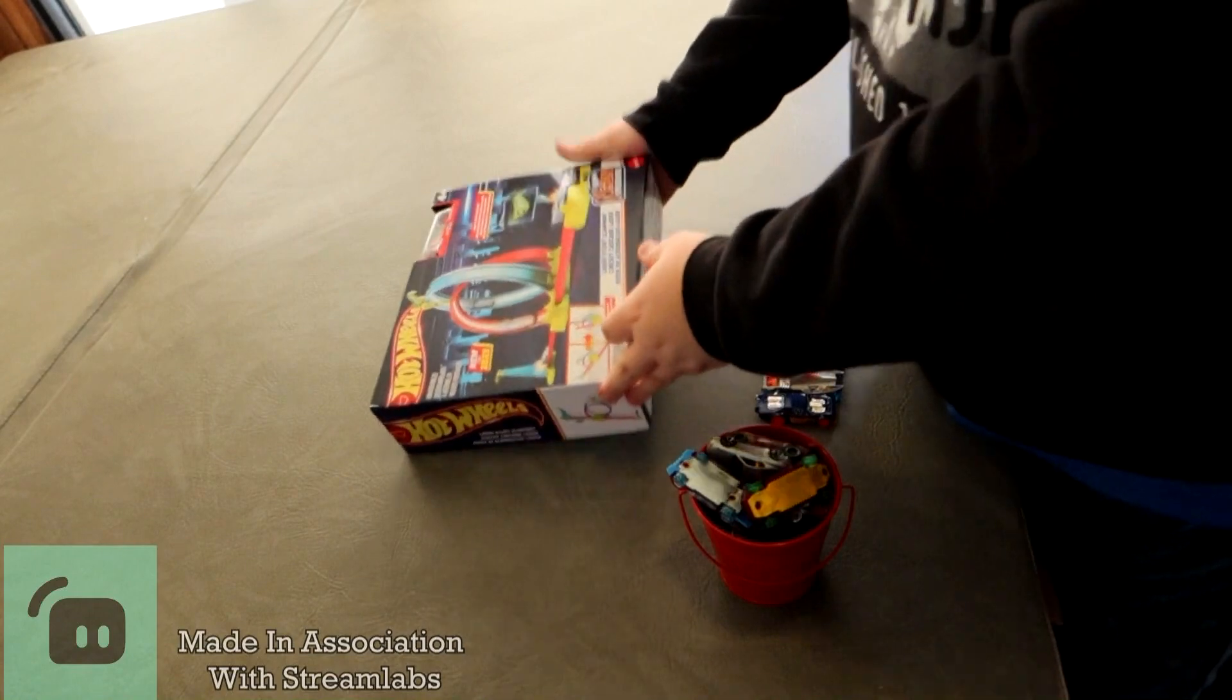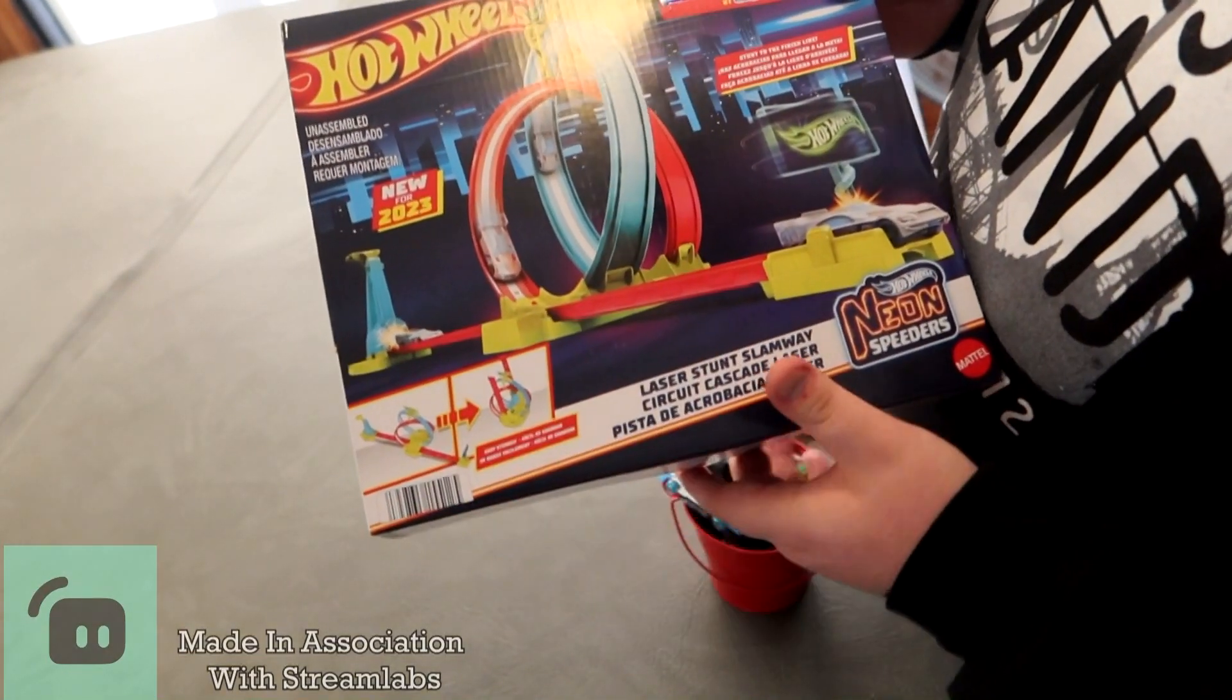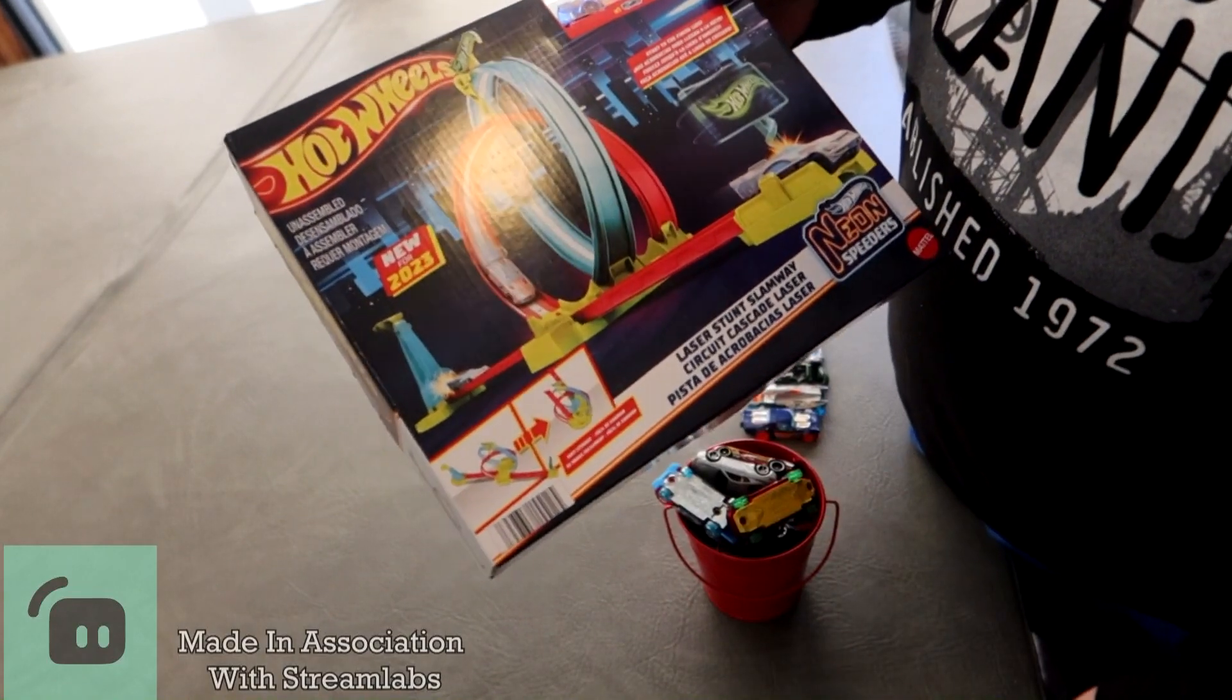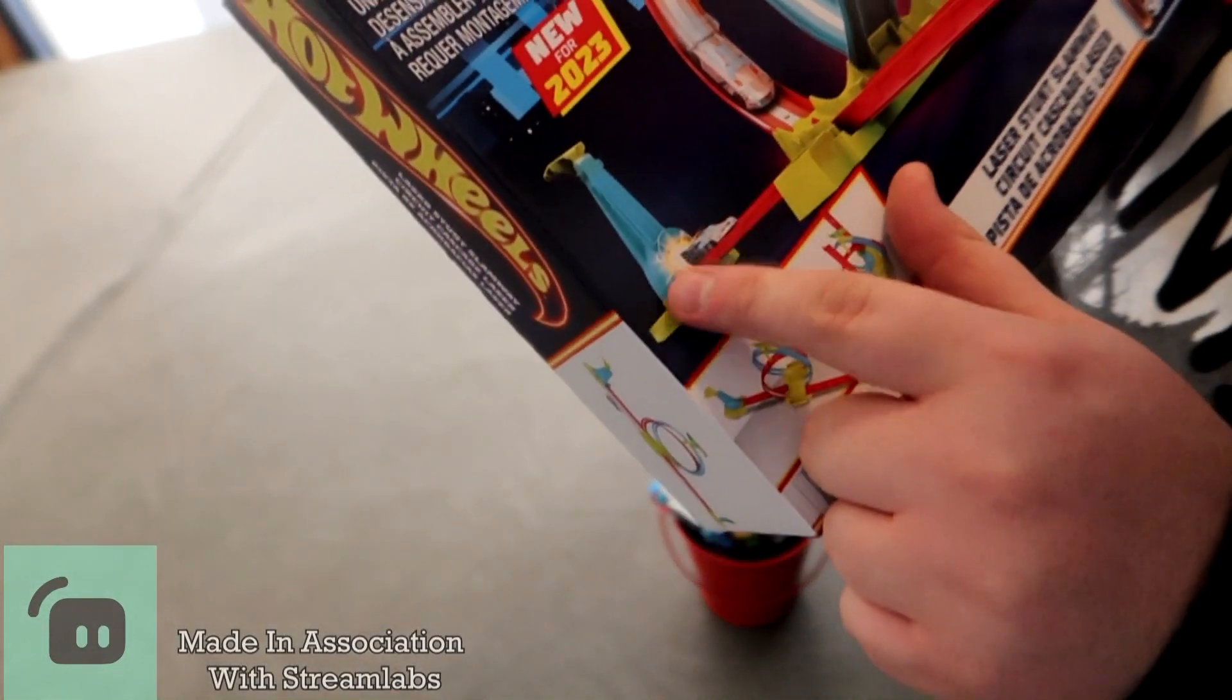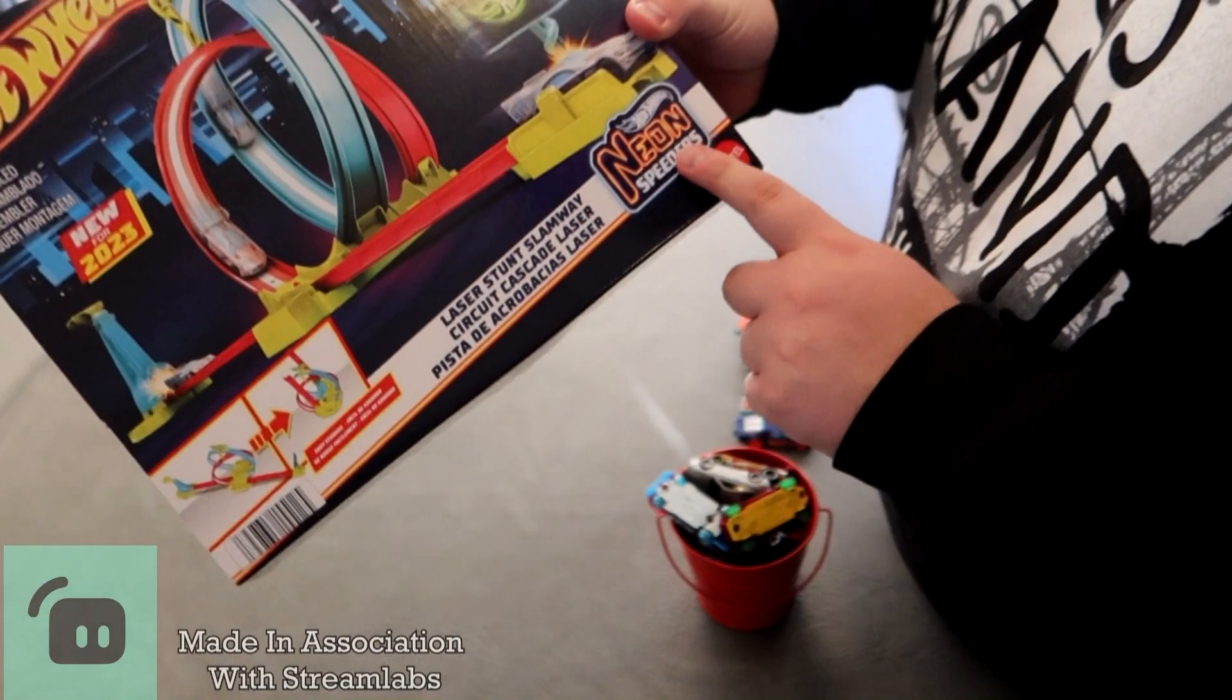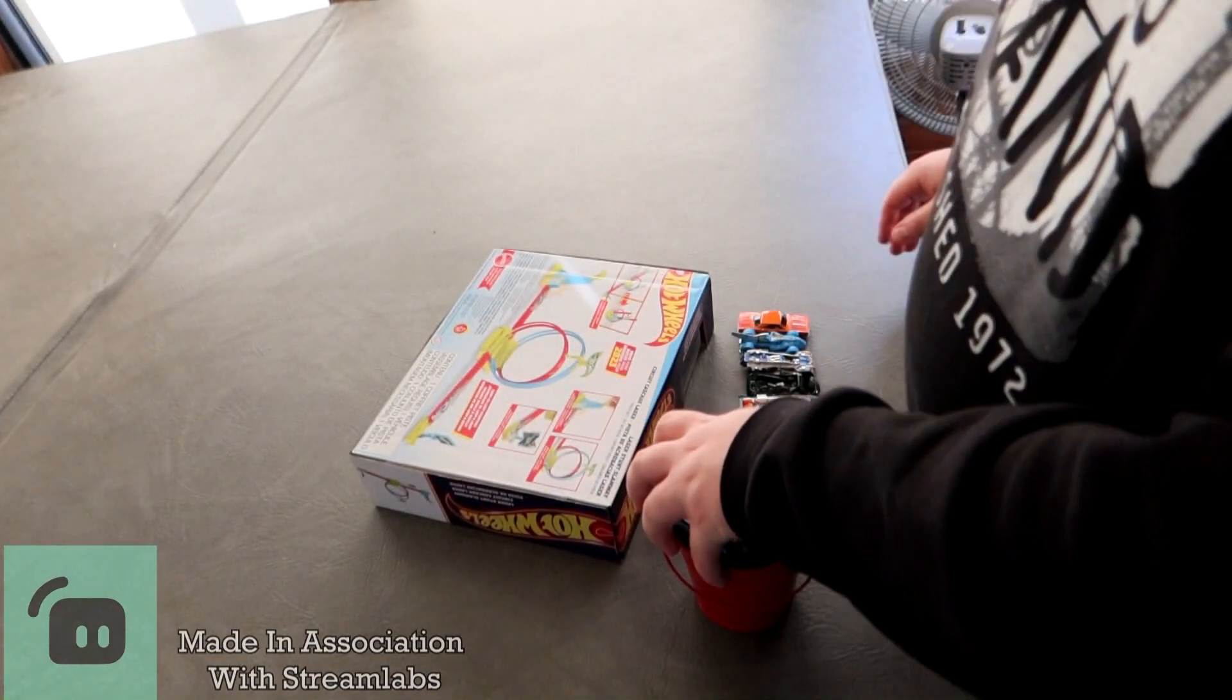In this case though, what we got here is another new set in box. We have the Laser Stunt Slam, which is essentially a double loop pattern which we've seen many times over. In fact, I wouldn't even be surprised if this was just more than just a clone recolorization. It uses this type of launcher which we've also seen many times over. It was used mostly for Track Builder and Track Builder Unlimited, but now we have the Neon Speeder series by Mattel, and of course we're seeing some recycling here.